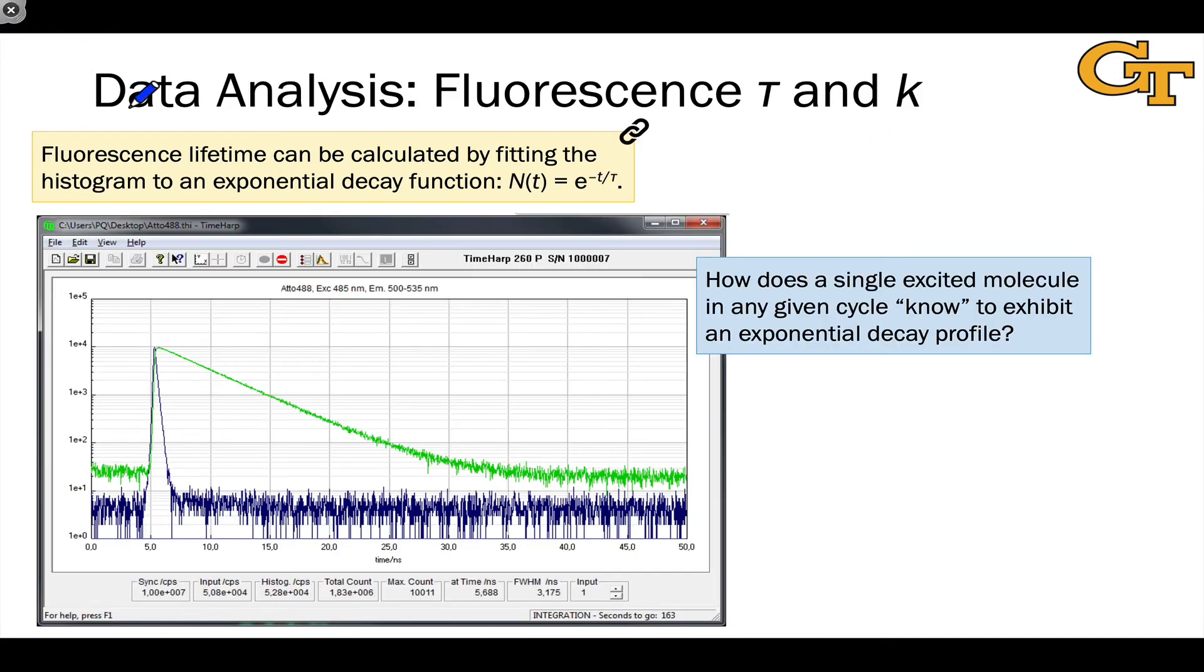Finally, let's talk briefly about the data analysis. And truth be told, this is not that different from flash photolysis. We can still model this decay in green using an exponential decay function. So something like n as a function of t, the number of counts as a function of time, is e to the negative t divided by tau or e to the negative kt. And from that, we can measure the lifetime and one over the lifetime, which is the rate constant for the fluorescence process.